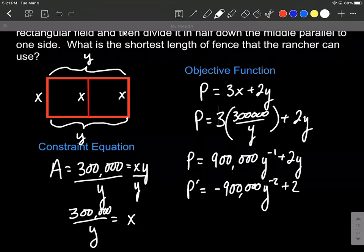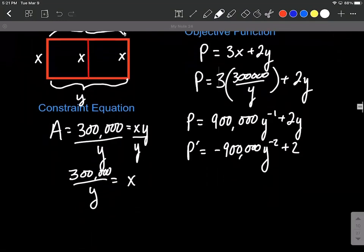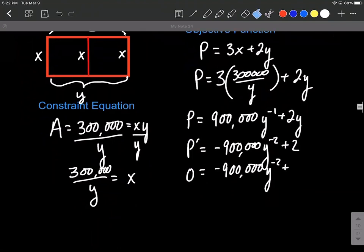From here what we can do is we want to set this equal to 0 and solve down. This will give us our critical numbers. So 0 equals negative 900,000 y to the negative second.